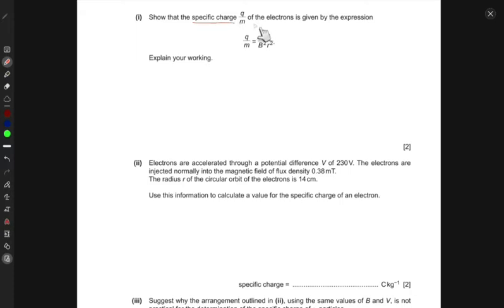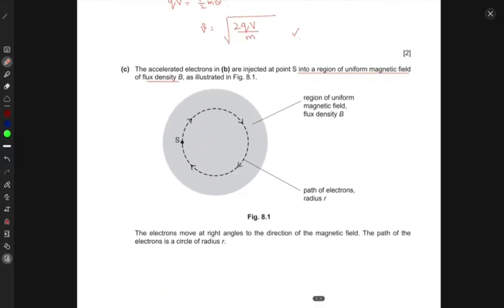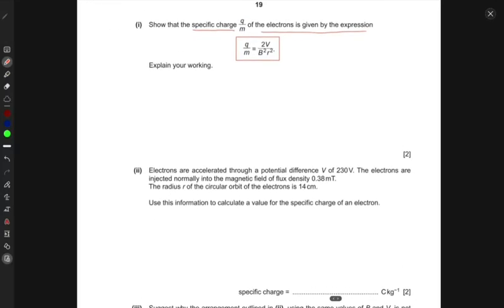We're required to show that the specific charge q over m of the electrons is given by this expression. Now what is happening? Basically, there would be some magnetic force, but this thing is moving in a circle. So the magnetic force is what is providing it the centripetal force so that this keeps moving in a circle, which means that the two forces can be equated such that F_m equals F_c.